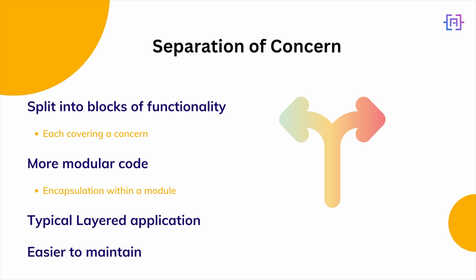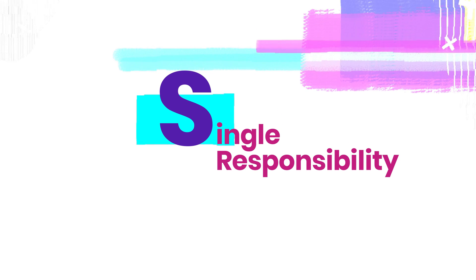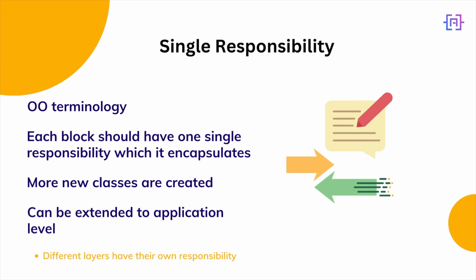Quite closely related is single responsibility. Single responsibility is a term from object-oriented programming which states that a class should just have one responsibility — a single reason to change. Anything else should go in a new class. This single responsibility is encapsulated entirely by that class.